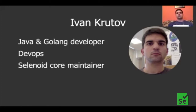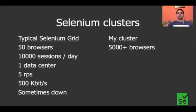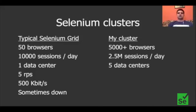How big is the cluster I'm working with? Compared to a typical Selenium grid having 50 browsers and executing 10,000 browser sessions per day, my cluster has more than 5,000 browsers running in parallel and executing more than two and a half million browser sessions per day. These browsers are distributed across five data centers. The average load in the cluster is about 4,000 requests per second, and the traffic is more than two gigabit per second. This cluster is certainly working all the time.